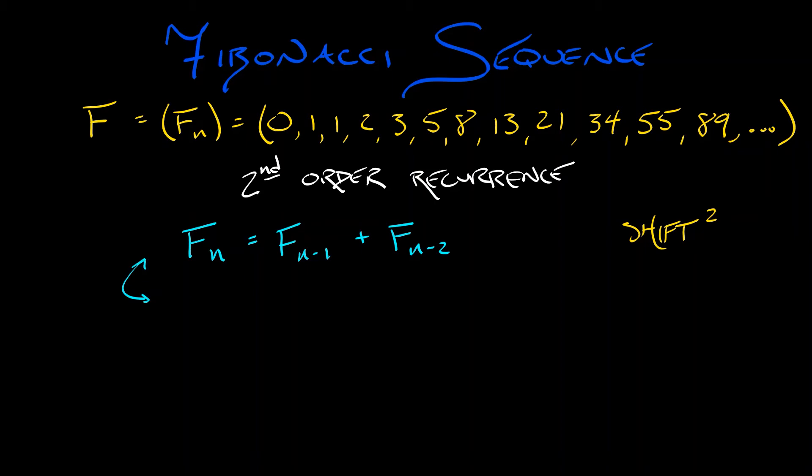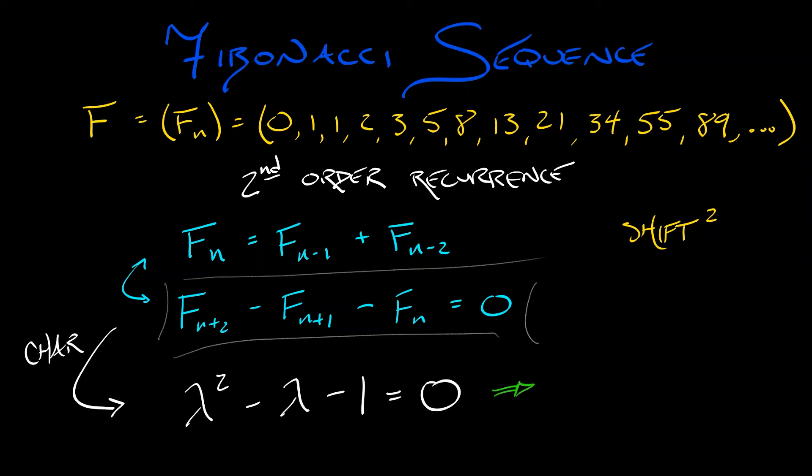What we get is FN plus 2 minus FN plus 1 minus FN equals 0. That means that your A constant is plus 1, B and C are negative 1. Now, this has a characteristic polynomial, lambda squared minus lambda minus 1 equals 0. What are the roots of that?